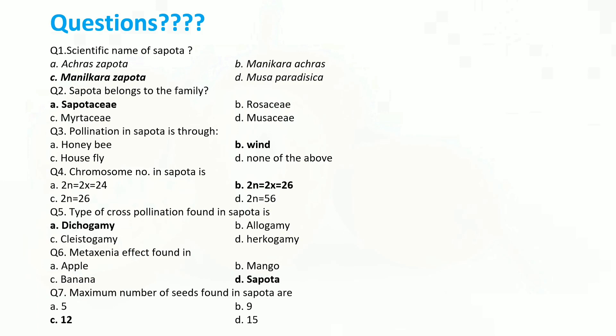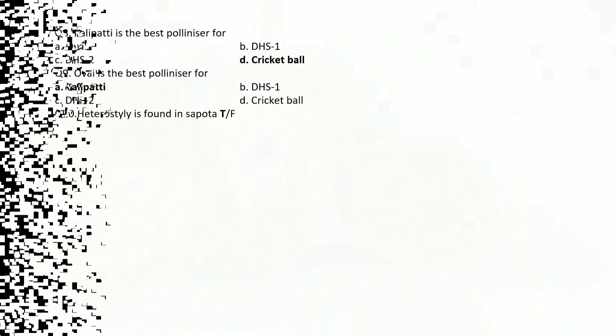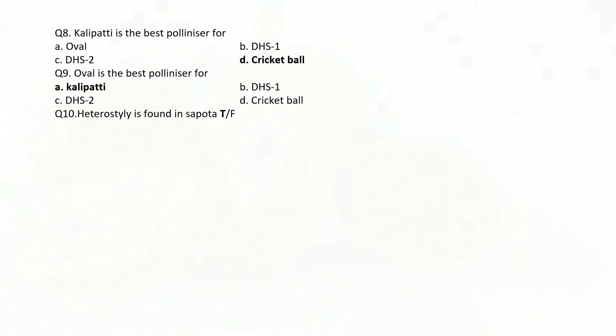Question 7: Maximum number of seeds found in Spotter are — Answer: 12. Question 8: Kalipati is the best polliniser for — Answer: Cricket ball. Question 9: Oval is the best polliniser for — Answer: Kalipati. Question 10 (True or False): Heterostyly is found in Spotter — Answer: True.